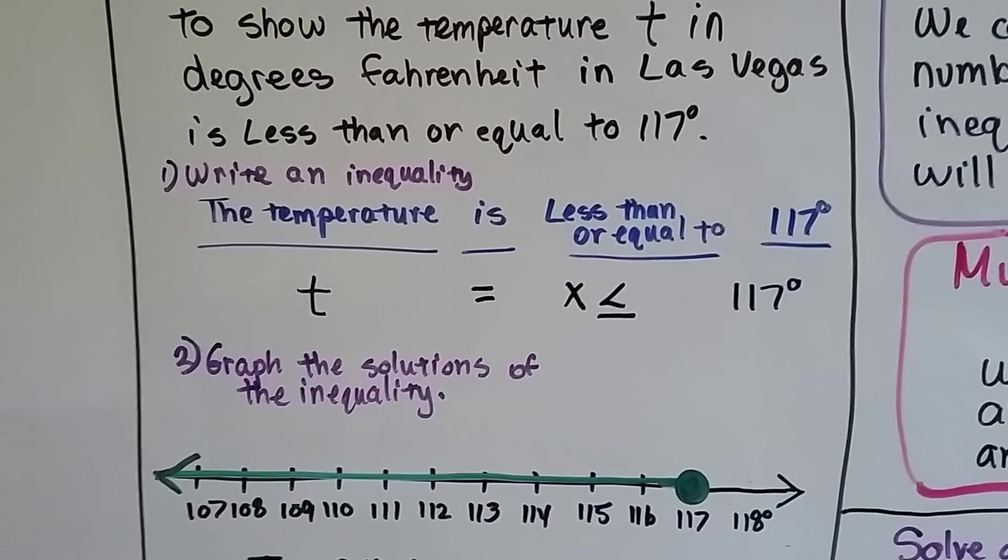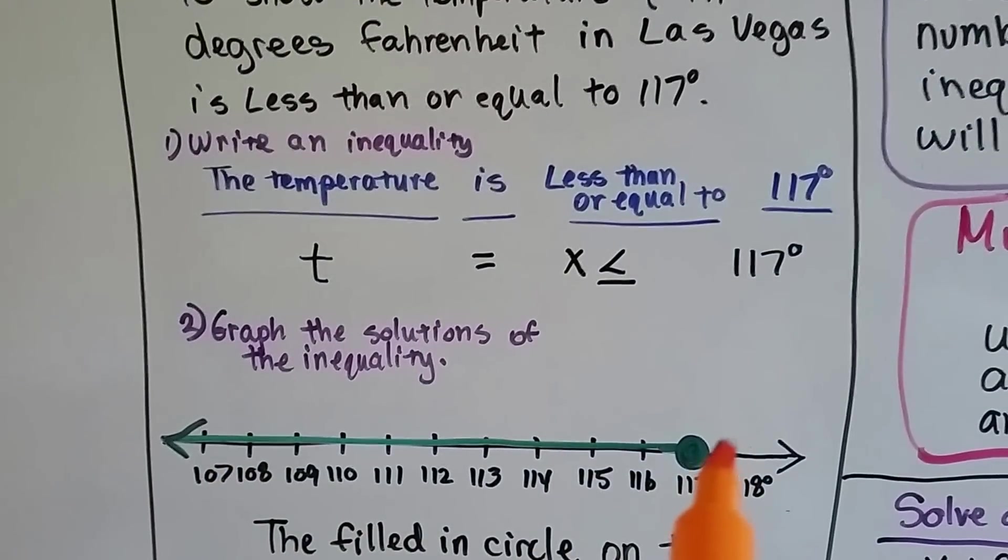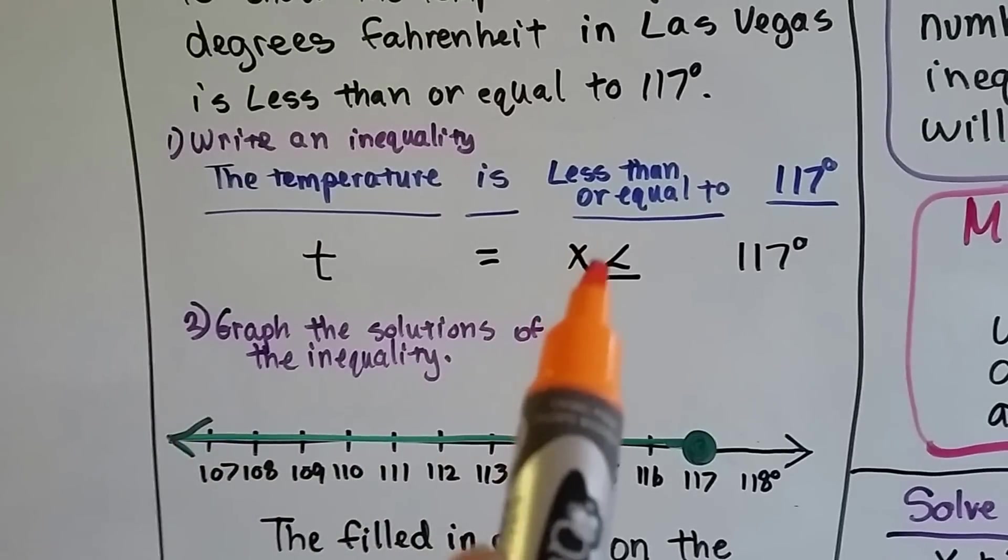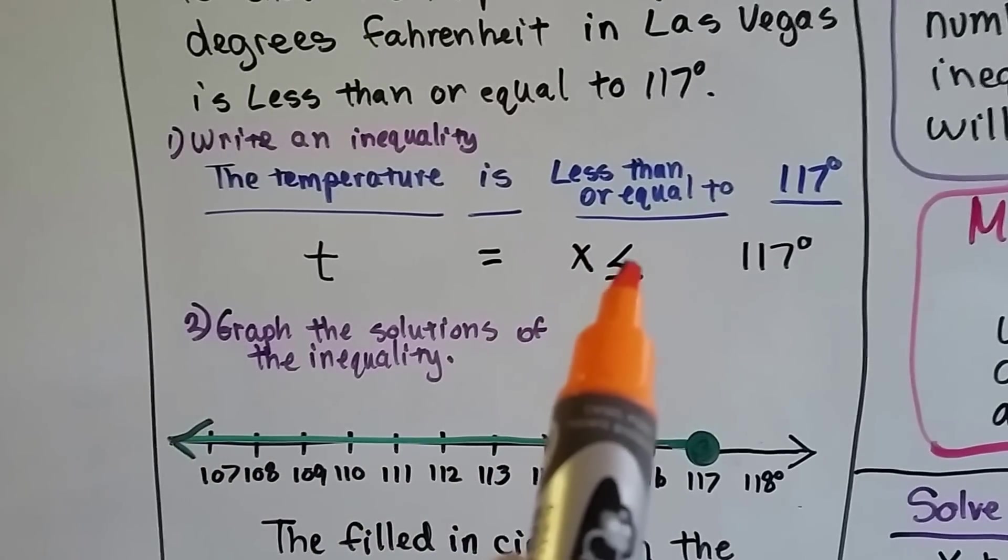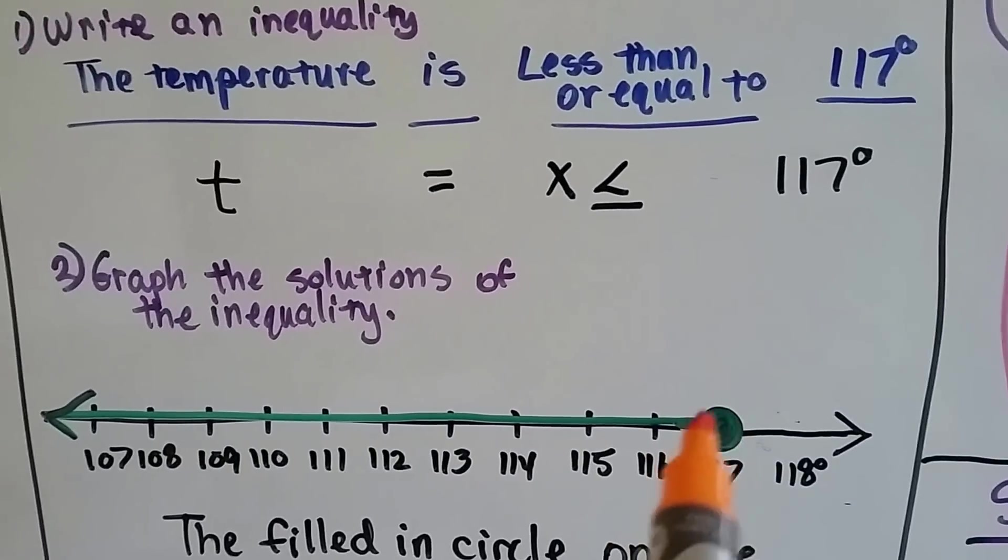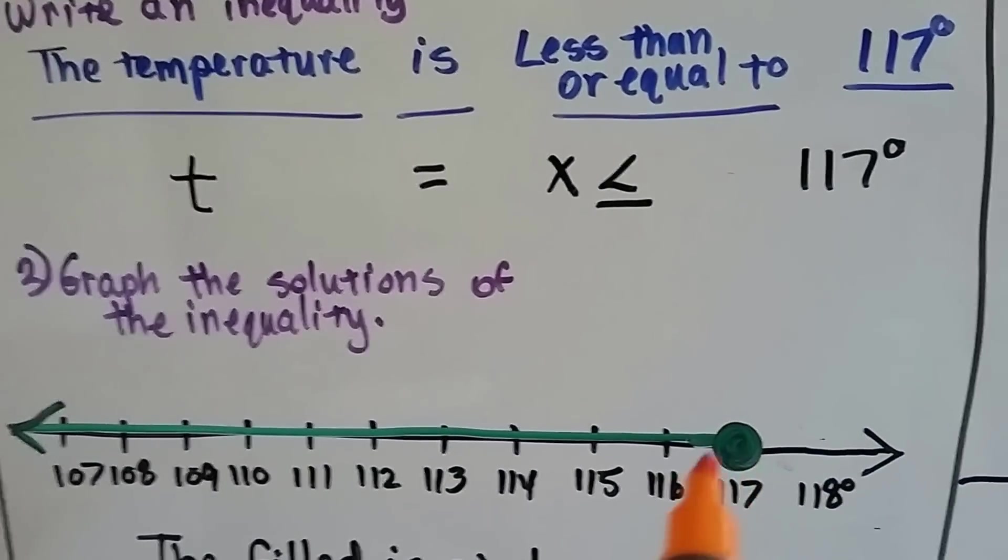Now we graph the solutions of the inequality on a number line. So here's 117 degrees and less because it's less than or equal to, and because it's or equal to, it includes the 117. So what we do is we fill in the dot on the 117.